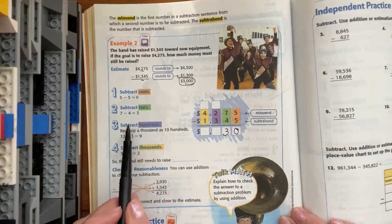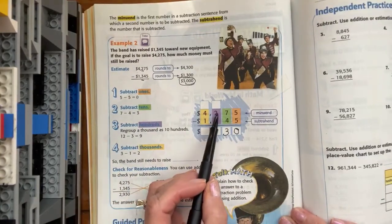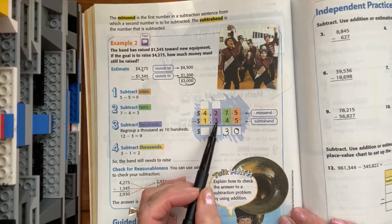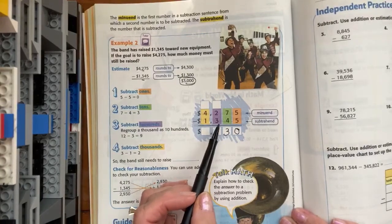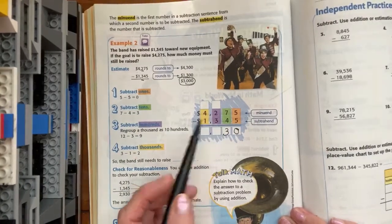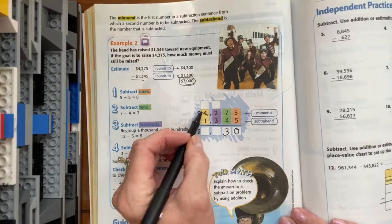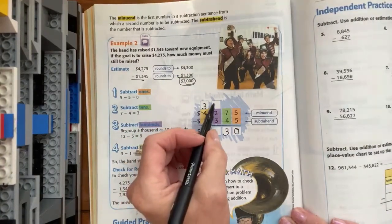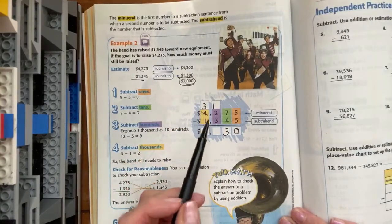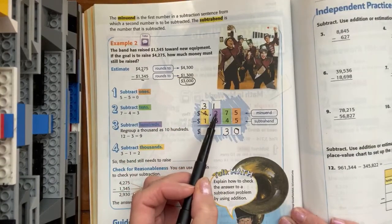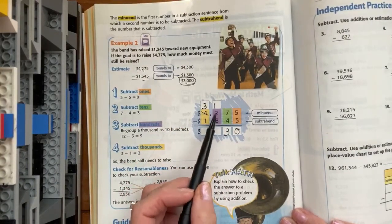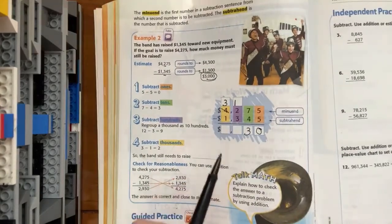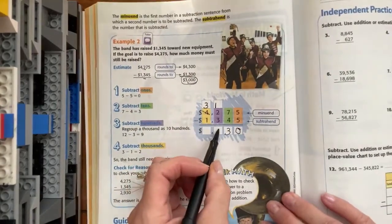Then we're going to move on to the hundreds. We have two groups of a hundred from which we're supposed to take three. If you have two, can you take three away? No. So we're going to go next door to the thousands. We're going to leave three thousands there, and we're going to take one and regroup it. So now we have twelve hundred minus three hundred. So twelve, take away three. Twelve, eleven, ten, nine leaves us with nine.